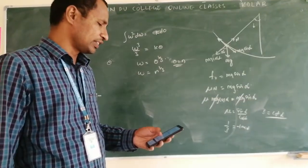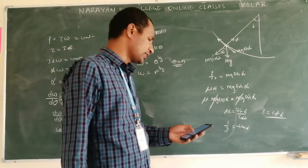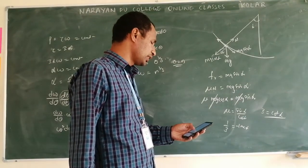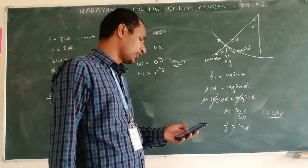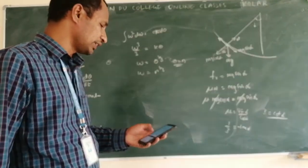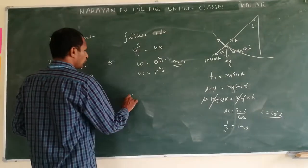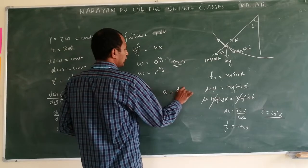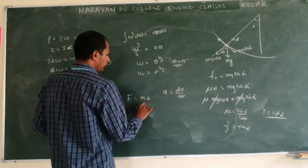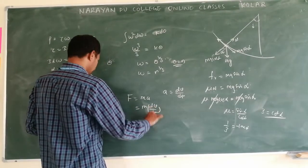A vehicle of 100 kg is moving at a velocity of 5 meter per second. To stop it in 1 by 10th second, the required force in opposite direction is - what is the force formula? F is equal to m into a. A is equal to what? Rate of change of velocity. So m into dv by dt.